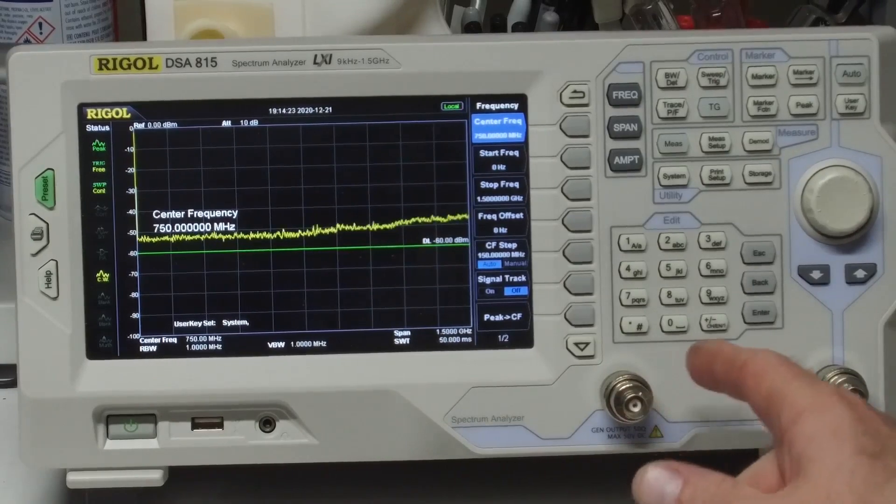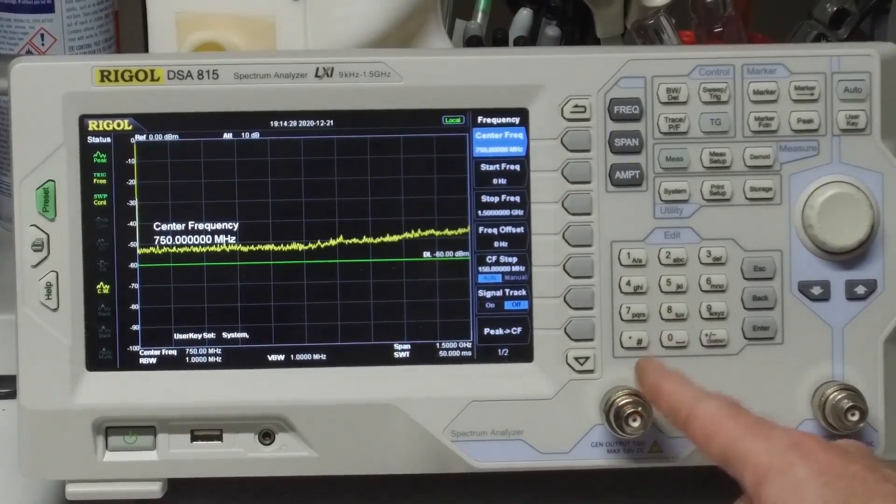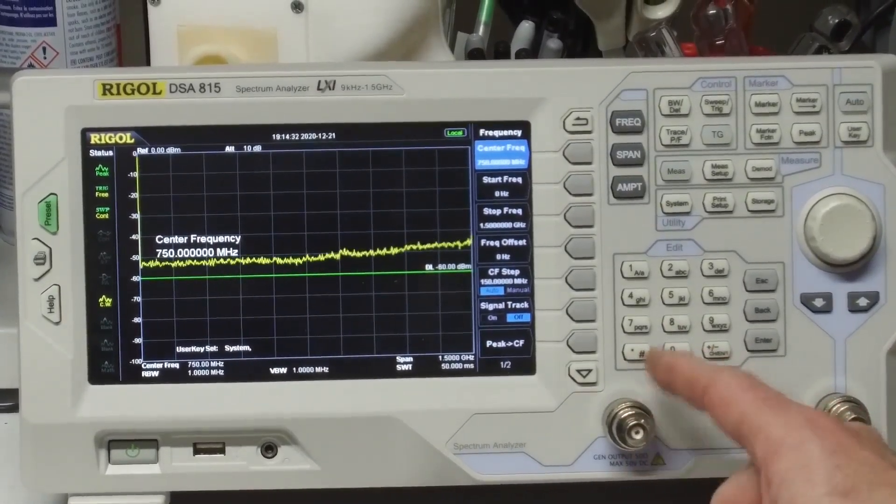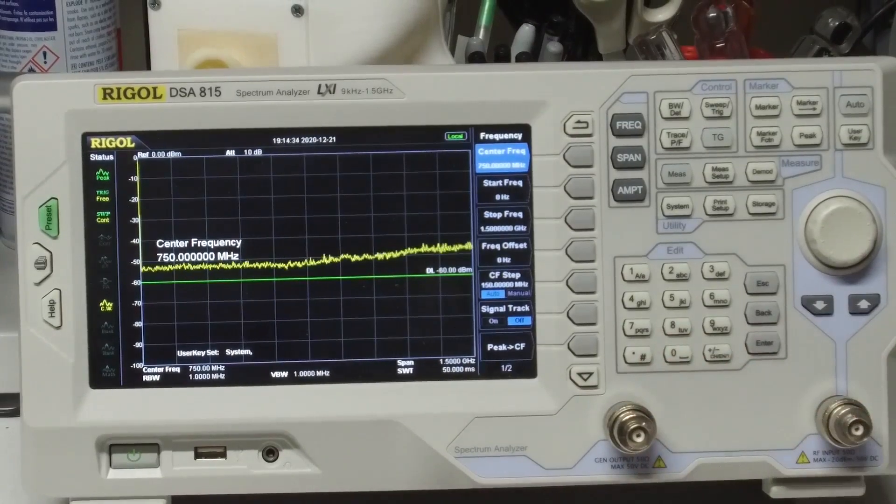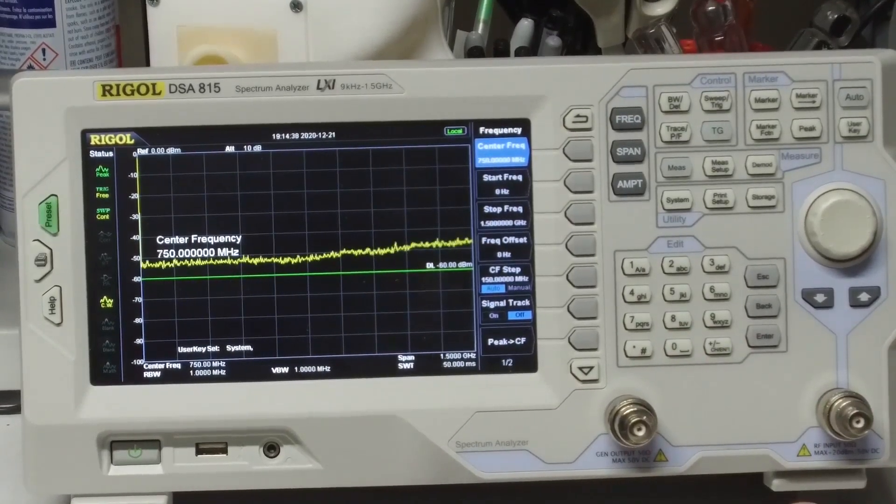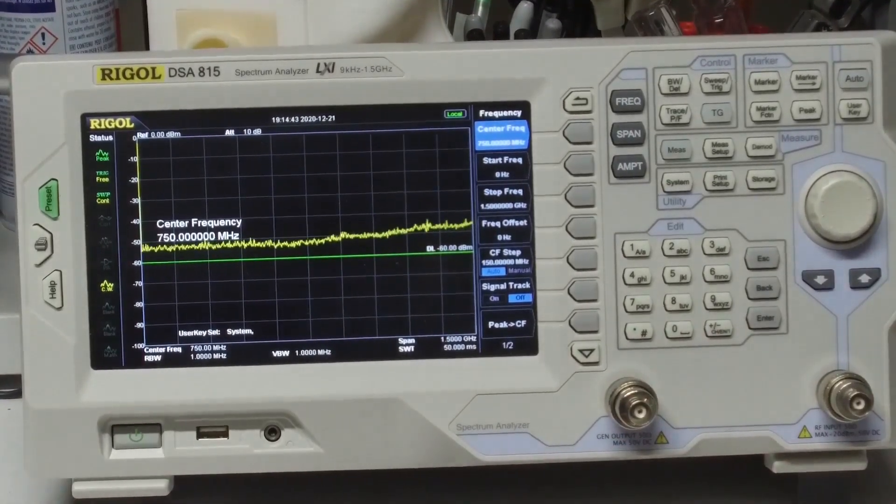The tracking generator option adds about a hundred dollars to the spectrum analyzer's cost, and if you're considering purchasing one of these Rigol DSA 815 spectrum analyzers, I would not buy it without the tracking generator.